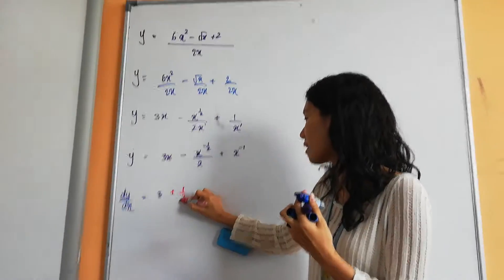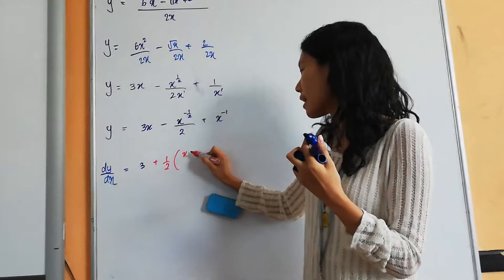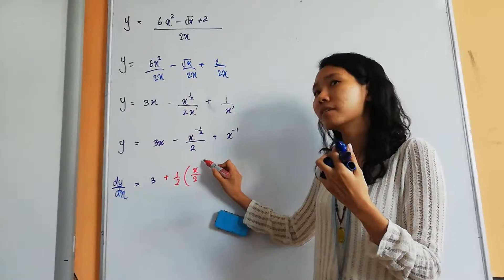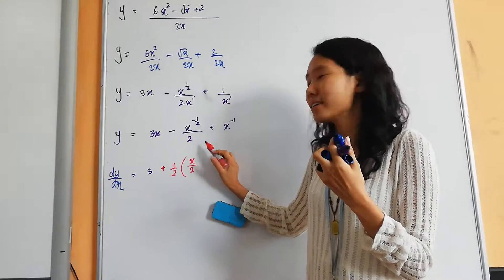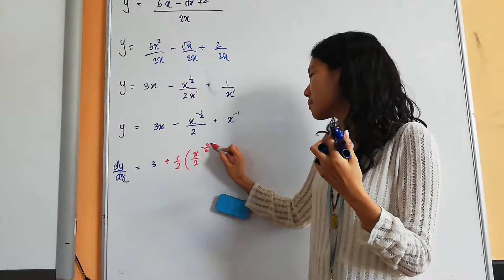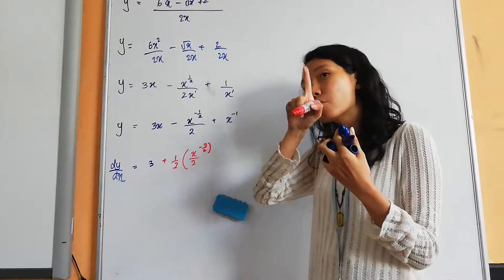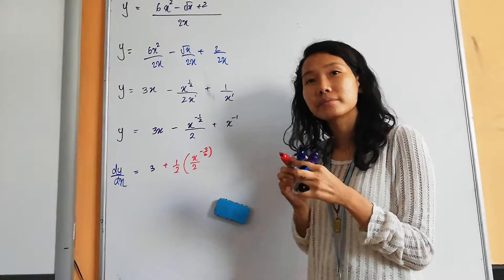Multiply with x to the power of? Negative 2. Negative 3 over 2. Nice. Because negative half minus 1. Negative 1 and a half. Okay.